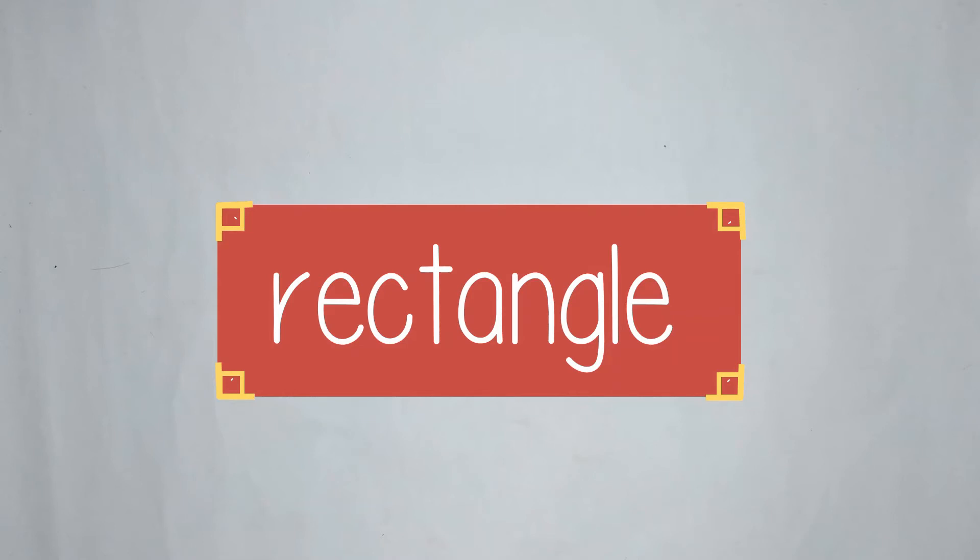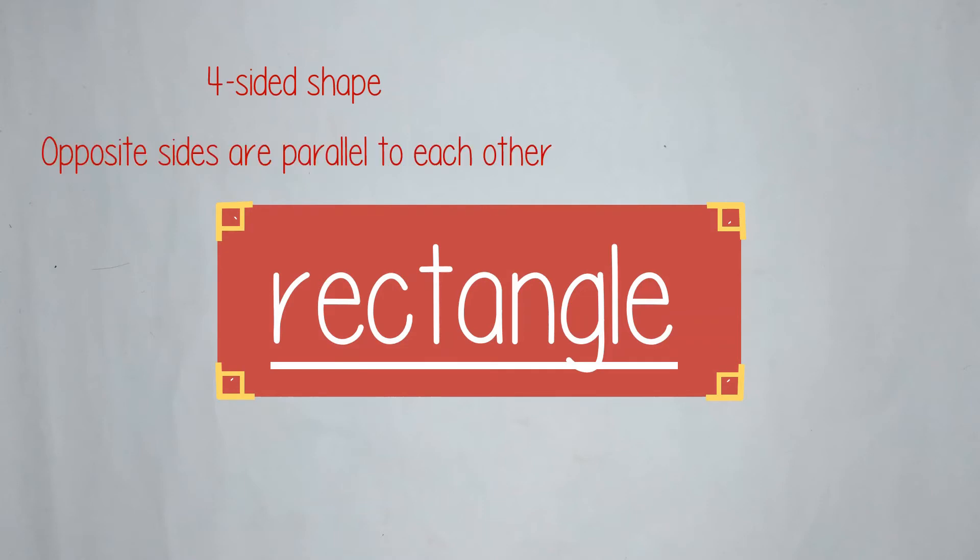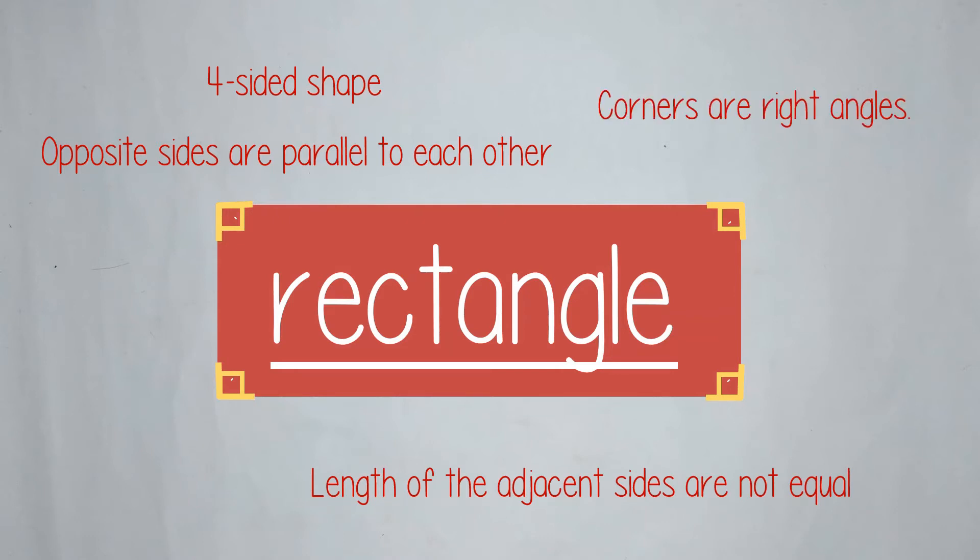Okay, let's review. A rectangle is a four-sided shape. Opposite sides are parallel to each other. The length of the adjacent sides are not equal. The corners are right angles. And opposite sides have equal lengths.